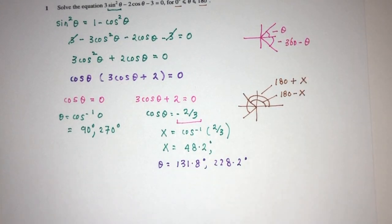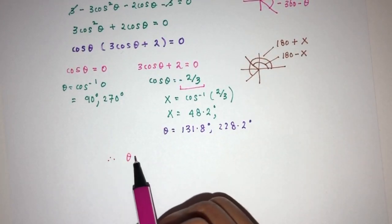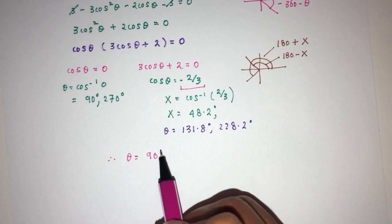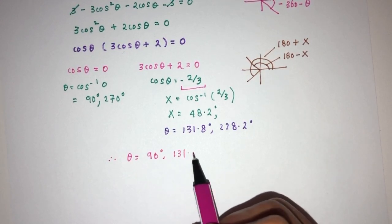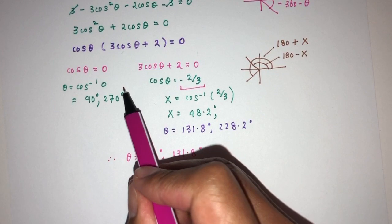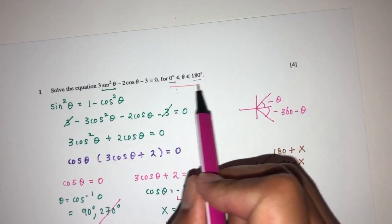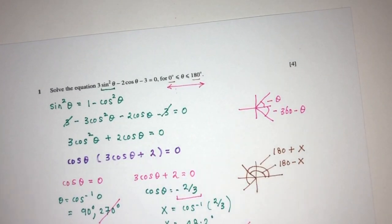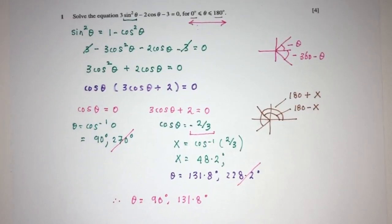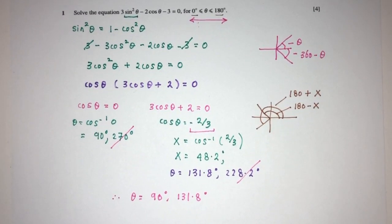Okay, now from this we can derive, we can conclude that theta will be the value of 90 and 131.8 degrees, because the rest will be outside of the domain that we are allowed to find the value of theta. And that will be the question in relation to trigonometry.